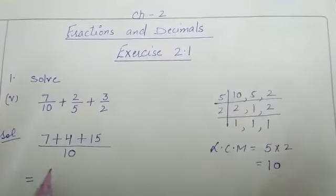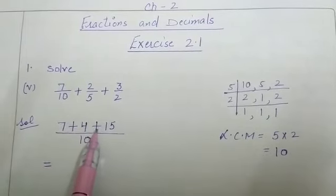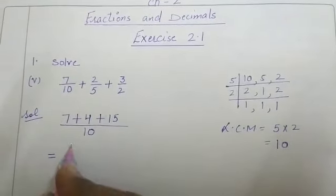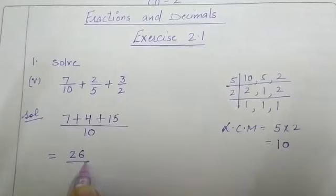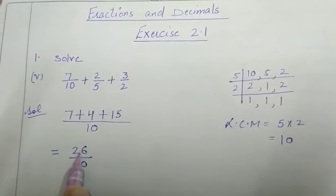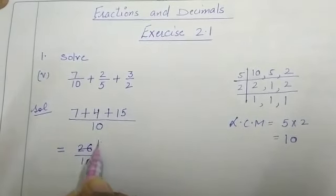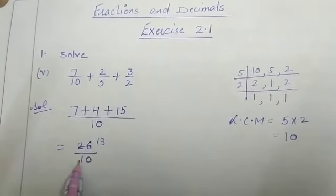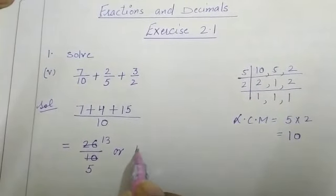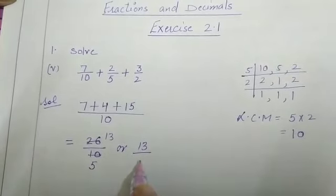By adding 7 plus 4 plus 15, we get 26 by 10. We will simplify this. Both numbers are divisible by 2. 2 13's are 26, 2 5's are 10. So this is the simplified form: 13 by 5.